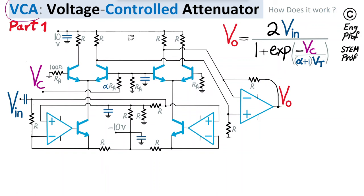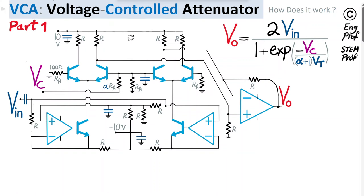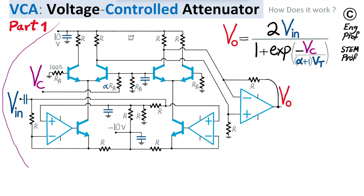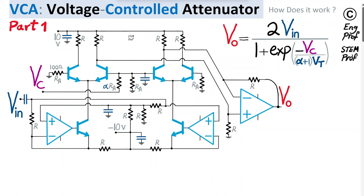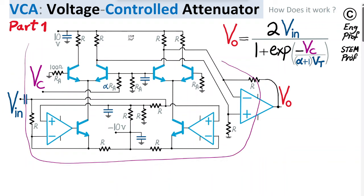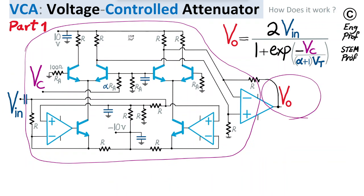An implementation of a VCA, or Voltage Controlled Attenuator, is discussed in this circuit design example. These circuits are electronically gain-controlling circuits with many applications, especially in audio signal processing, where the input audio signal V_in is gain-controlled electronically by this circuit to produce the output voltage V_out.